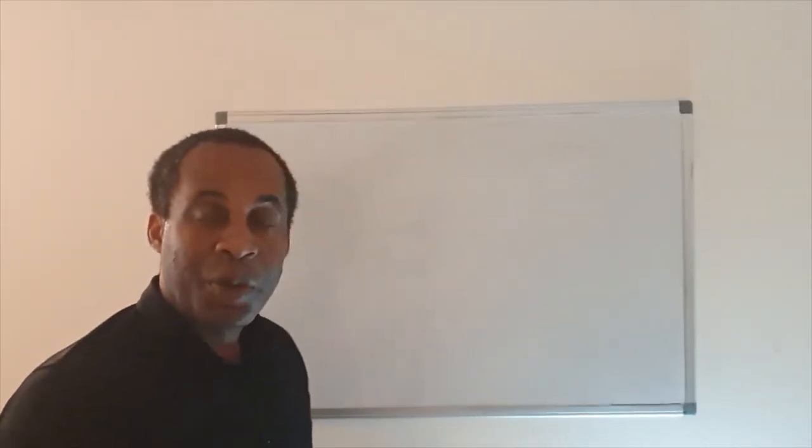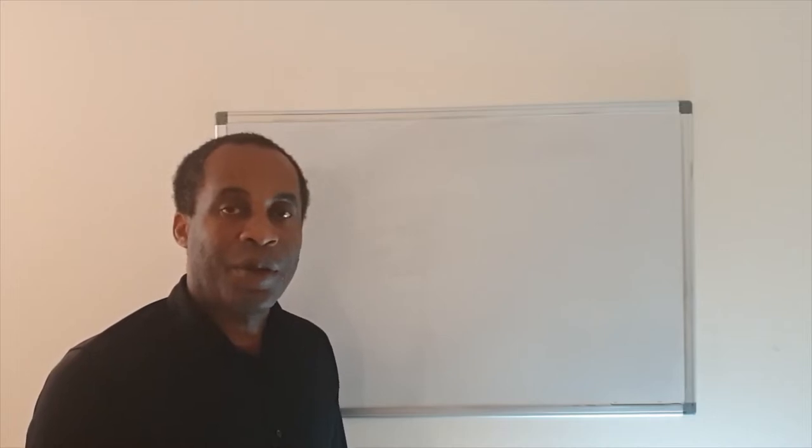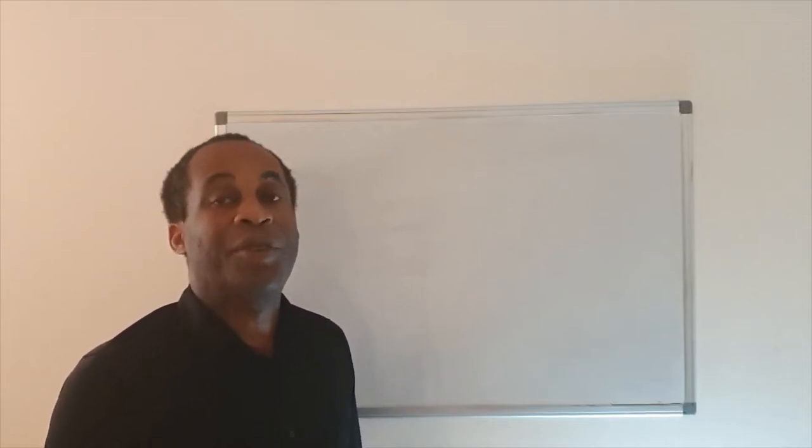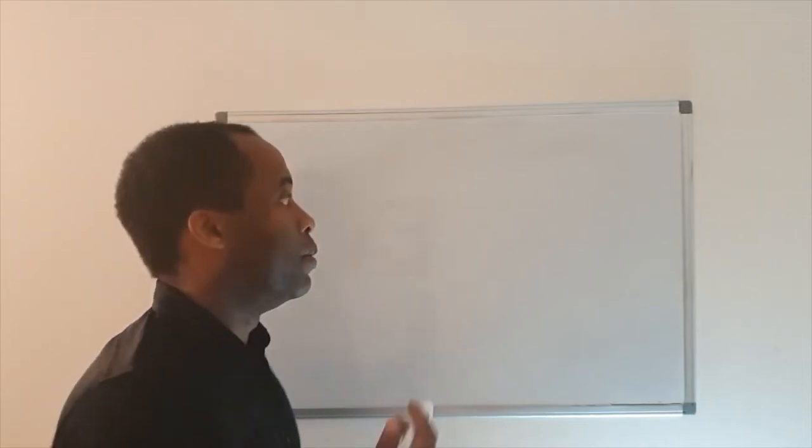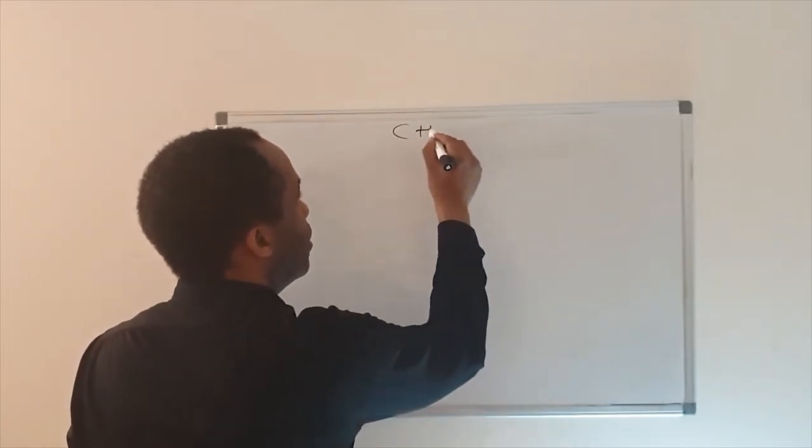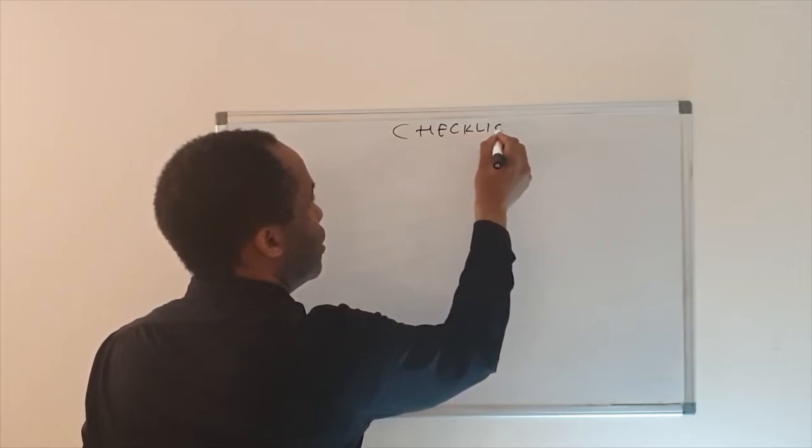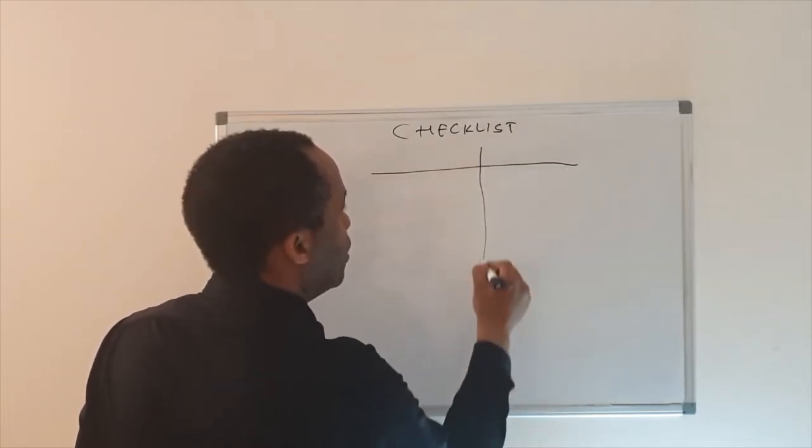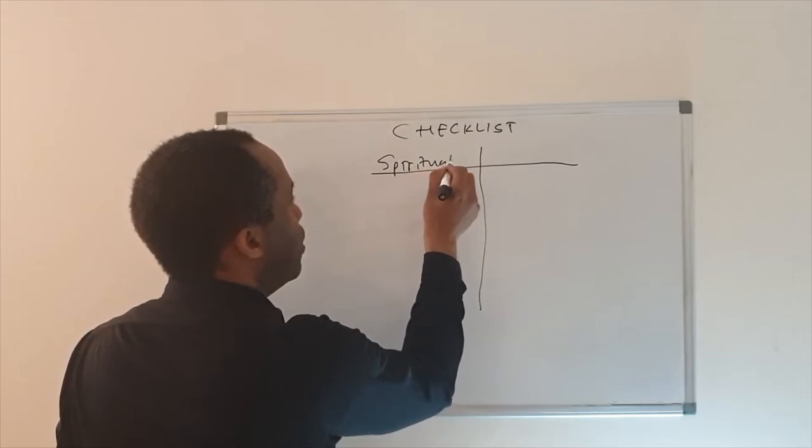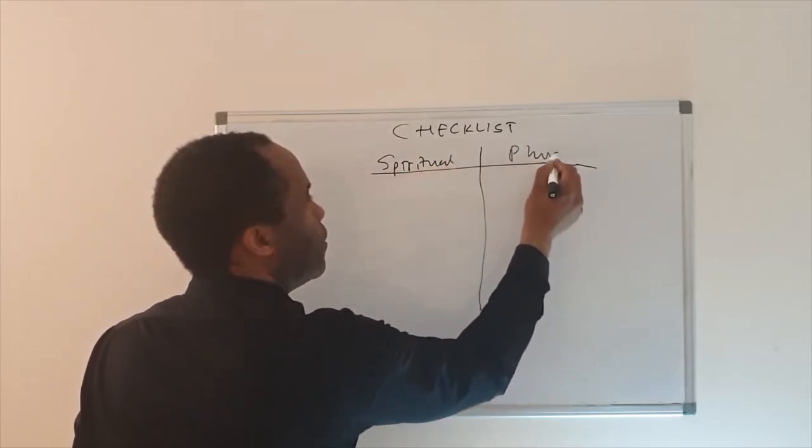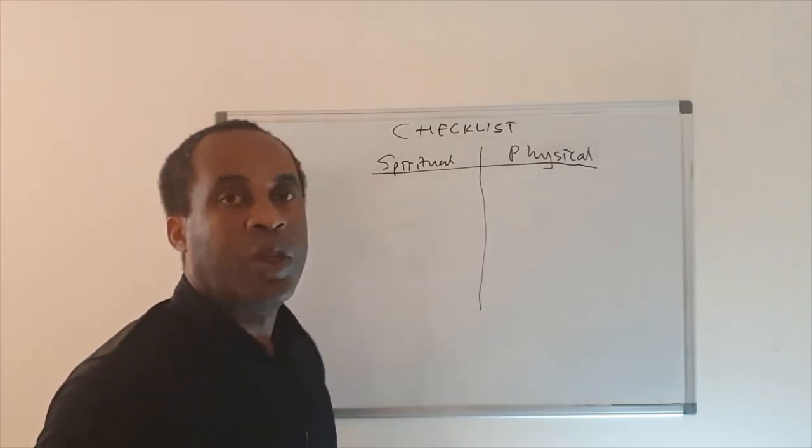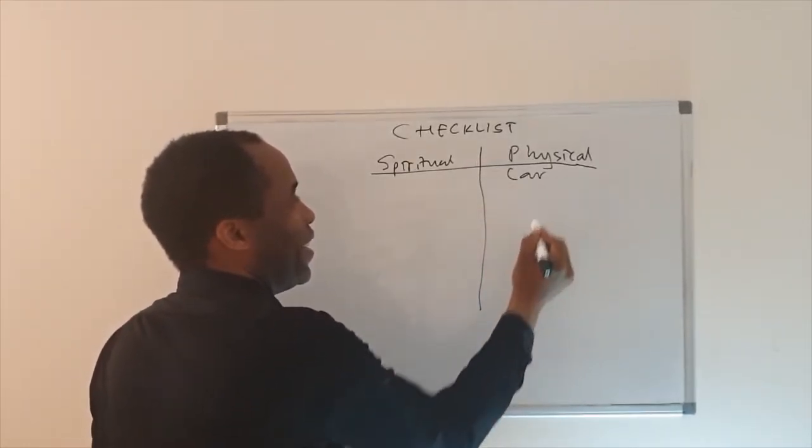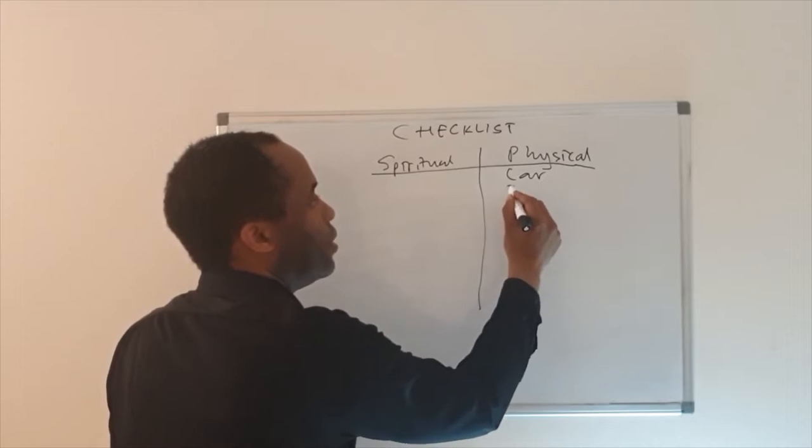So I've noticed that most people have something like a checklist. It's there in their mind or it's written down. Sometimes they've written down the checklist and most of the ones I've seen or I've heard of are mainly physical attributes that they look for in people. So I'll just draw something like a table. I'll call it checklist.